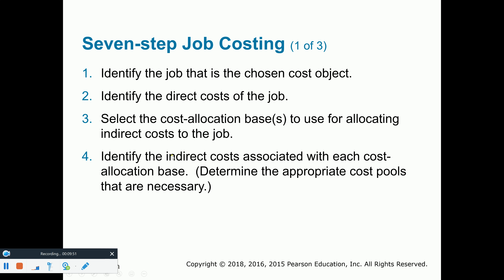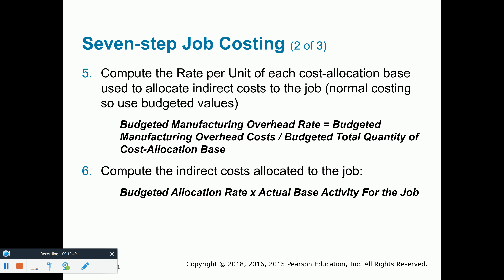We identify all the indirect costs: maintenance, janitorial, taxes, rent, electricity, security — anything associated with the manufacturing plant that is difficult to directly relate to each individual job or inventory item being manufactured. This includes indirect materials and indirect labor. Most materials and labor are direct, but some are indirect — for example, the supervisor of the manufacturing plant. That supervisor is not actively working on the assembly line, so his or her salary is considered indirect labor.